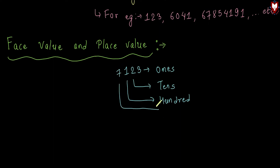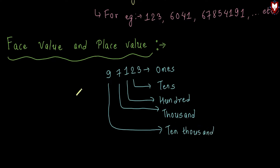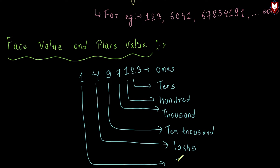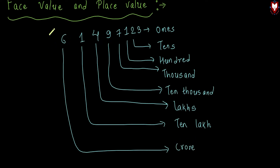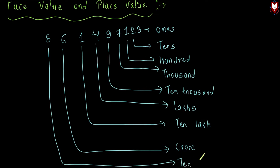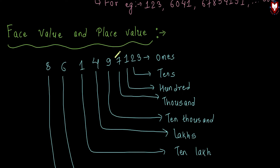Continuing with place values: after hundreds we have thousands, then ten-thousands. So for the number 6,78,54,191, we identify each digit's position. The place value of 7 is more than 1,000.